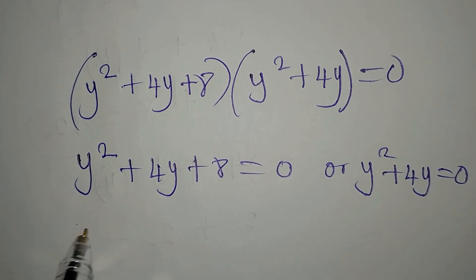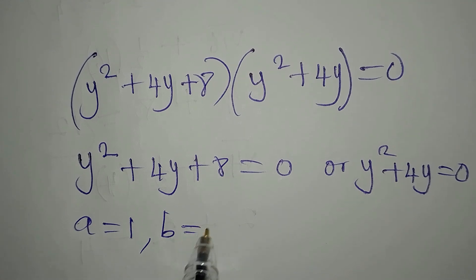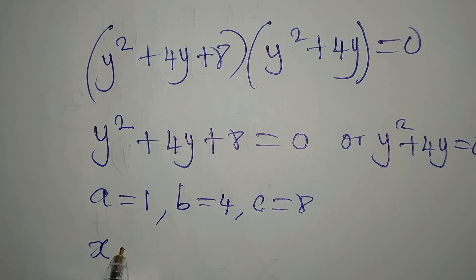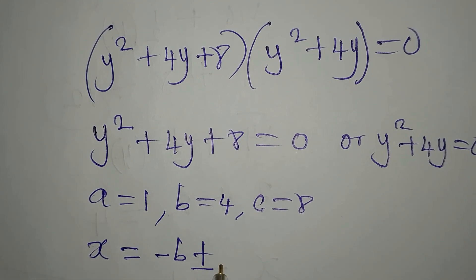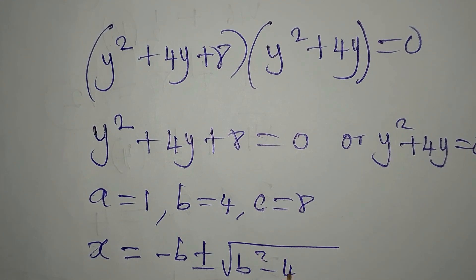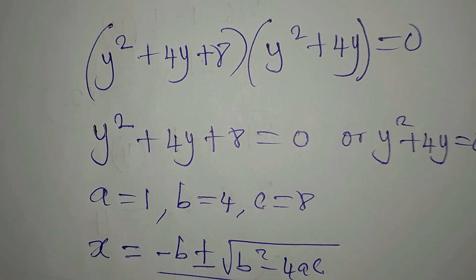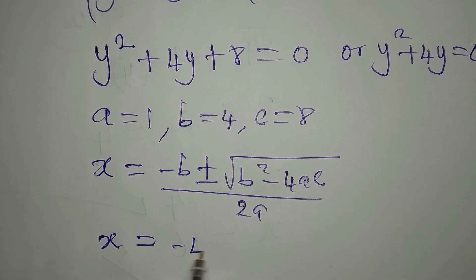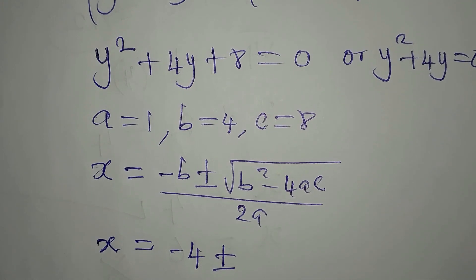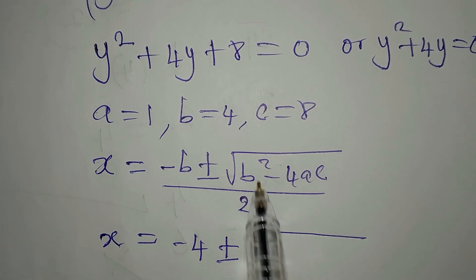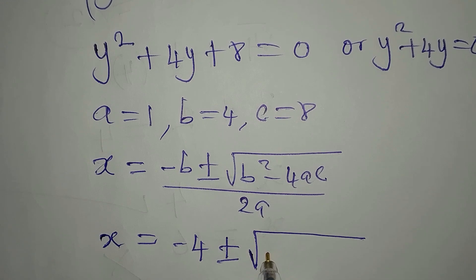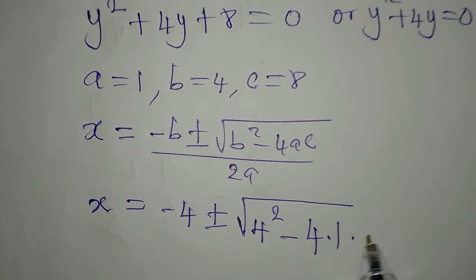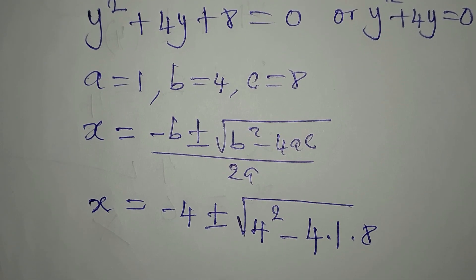For y squared plus 4y plus 8 equals 0, our a is 1, b is 4, and c is 8. Using the quadratic formula: x equals negative b plus or minus square root of (b squared minus 4ac), all over 2a. So x equals negative 4 plus or minus square root of (4 squared minus 4 times 1 times 8).